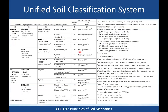Sands are classified the same way, giving SW and SP, except the coefficient of uniformity threshold is 6 instead of 4. If fines content is greater than 12%, we don't calculate CU and CC — we use Atterberg limits to determine whether it's GM (silty gravel) or GC (clayey gravel). There are several footnotes here — F, G, and H — covering cases like adding 'with sand.' If the fines classify as CL-ML in the 4 to 7 PI region, you use dual symbols such as GC-GM or SC-SM. Always read the footnotes.